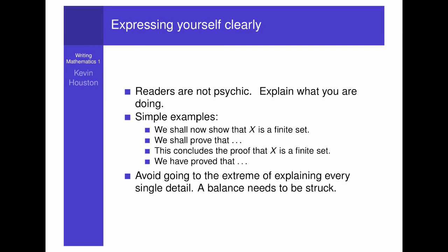Let's look at the student's example. We can see that x equals minus b cosine theta sub into a squared equals b squared plus c squared minus 2, etc, etc. Actually, they have an ugly arrow pointing to another part of the page. Don't draw arrows everywhere. It looks bad. You will never see it in a book. In books, they label the equation or formula of interest with a letter or symbol and use that letter or symbol later on.